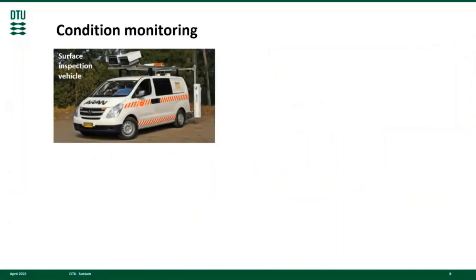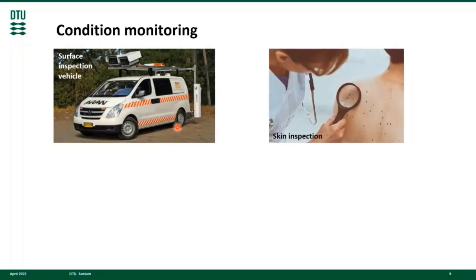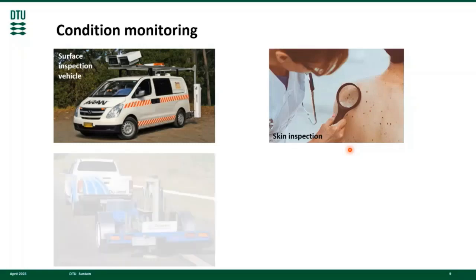Pavement surfaces are visually inspected to assess damage levels. Here you can see a surface inspection vehicle as an example. The results of these inspections are recorded, classified, and reported. Warning flags are raised if values exceed normal or expected ranges. Similarly, human surfaces are visually inspected to assess damage levels. The results are recorded, classified, and reported. Warning flags are raised if values exceed normal or expected ranges.